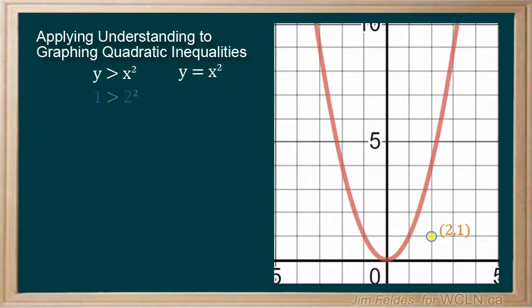Try the point 2, 1. This is false as 1 is not greater than 4. And the point 1, 2 is true. And a point on the line like 1, 1 is also false.